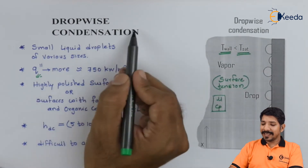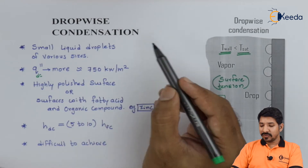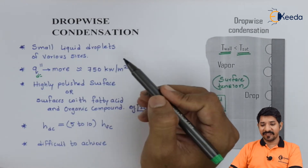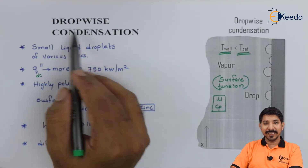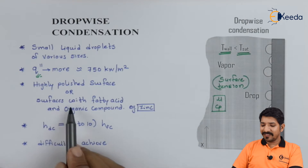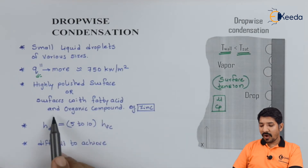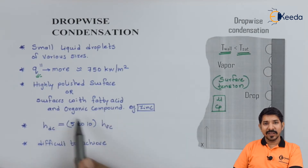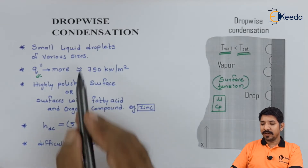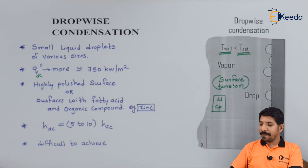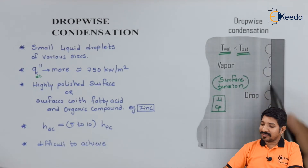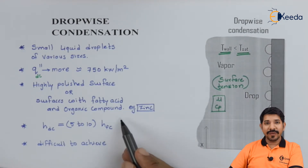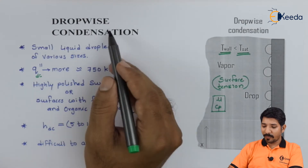What decides whether condensation is drop-wise or film-wise depends on the surface. If the surface is highly polished, we will end up getting drop-wise condensation. Similarly, if the surface has fatty acids, organic acids, or organic compounds applied to it, we are going to get drop-wise condensation.